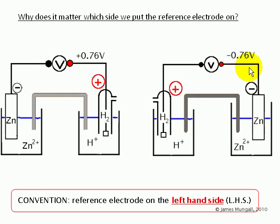And once again, we want to be able to quote the electrode potential of zinc relative to hydrogen without having to clarify each time on which side we've put the reference electrode. So we have a second convention, which is that the reference electrode is on the left hand side.